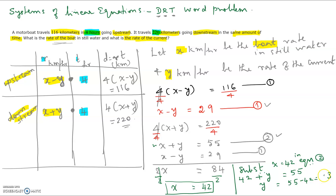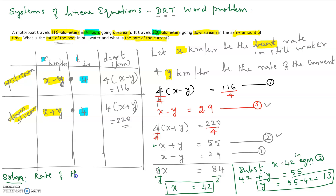So y equals 13. We also need to interpret what x and y are in the context of the problem. X is the rate of the boat in still water, which is 42 kilometers per hour. Y is the rate of the current, which is 13 kilometers per hour. In a word problem, units are important, so always write the units.